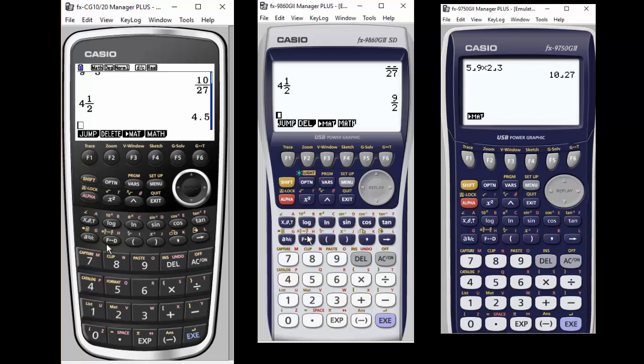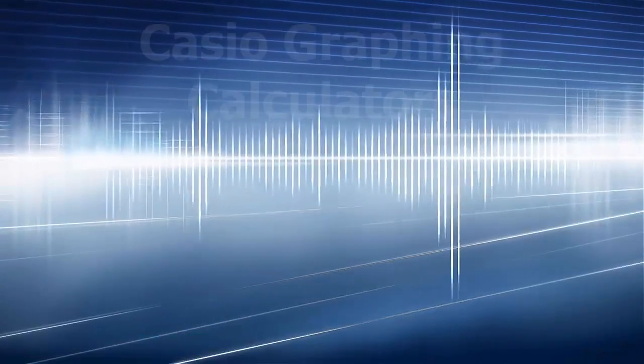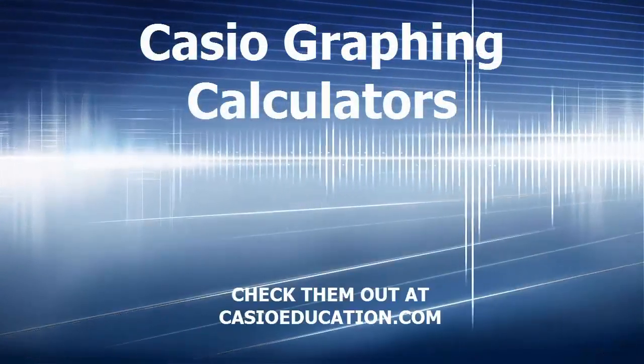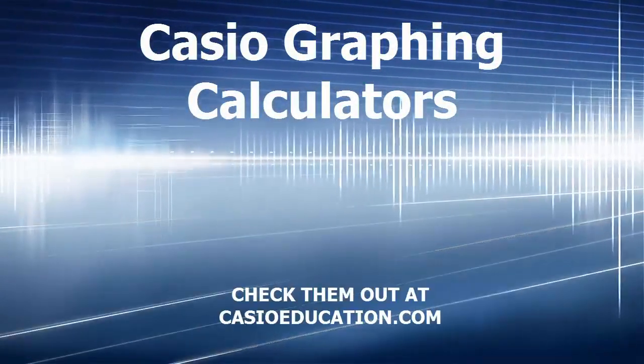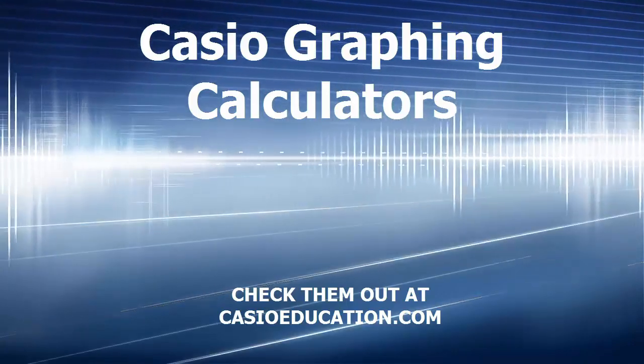So obviously there's a lot of decisions to make. Cost might be an element. So obviously it goes from more affordable from the right to the left, but check out all the features on casioeducation.com.